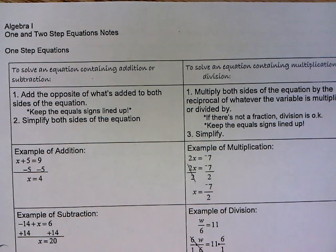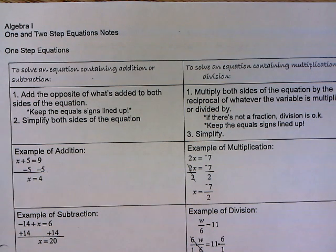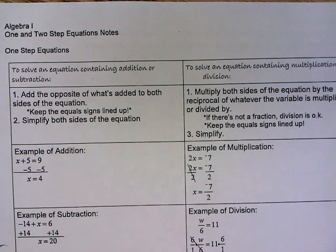Today we're going to discuss solving one-step and two-step equations. Whenever you're going to solve a one-step addition or subtraction equation, you're trying to isolate your variable and get it alone. To do that, we're going to do the inverse operation to get it to the other side, which means if it's an addition equation, we subtract what is with my variable from both sides. If it's a subtraction equation, we add what is with my variable to cancel it out and isolate it.